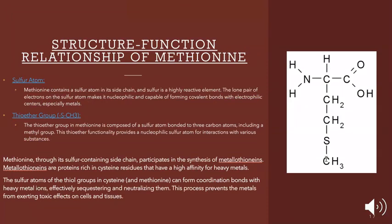The structure-function relationship of methionine: methionine contains a sulfur atom in its side chain, and sulfur is a highly reactive element. The lone pair of electrons on the sulfur make it nucleophilic and capable of forming covalent bonds with electrophilic centers, especially metals. The thioether group in methionine is composed of a sulfur atom bonded to carbon atoms including a methyl group. This thioether functionality provides the nucleophilic sulfur atom for interactions with various substances. Methionine through its sulfur-containing side chain participates in the synthesis of metallothionines. These metallothionines are proteins rich in cysteine residues that have high affinity for heavy metals. The sulfur atoms can form coordination bonds with heavy metal ions, effectively sequestering and neutralizing them. This process prevents the metals from exerting toxic effects on cells and tissues.